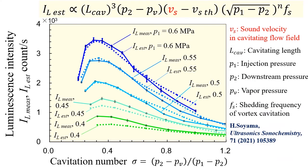When sound velocity was considered as a factor of luminescence intensity, the estimated values are in good agreement with measured values. Namely, the sound velocity of the cavitating flow field is a very important factor.